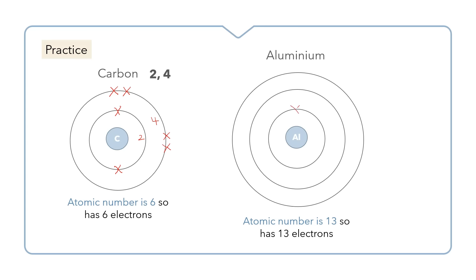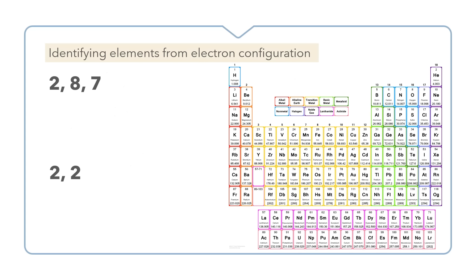Aluminium has an atomic number of 13, so it has 13 electrons. We start from the first shell, placing two there. The second shell holds up to eight, so we place eight, bringing our total to ten. We still have three remaining electrons, which we place in the third shell. So we have two in the first, eight in the second, and three in the third — the electron configuration of aluminium is 2,8,3.